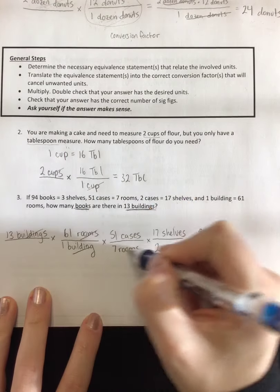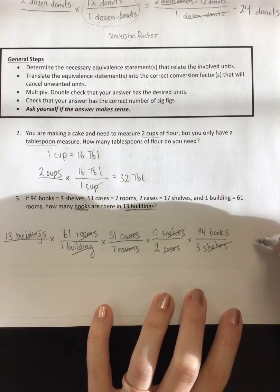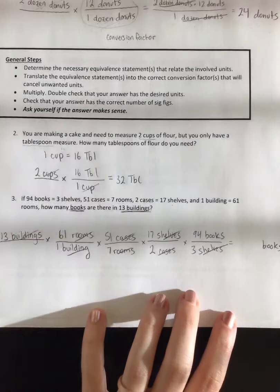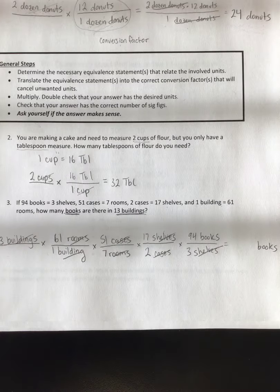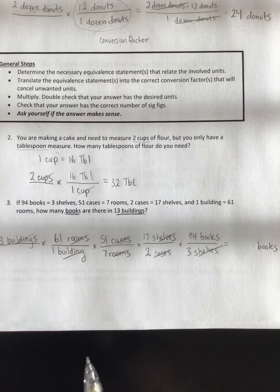So, buildings cancels with buildings. Rooms cancel with rooms. Cases cancel with cases. Shelves cancel with shelves. And the only unit I'm left with is books, which is what I wanted. So all of that work we just did to end up with plain old books.